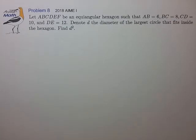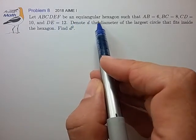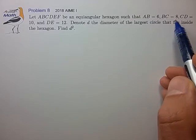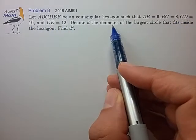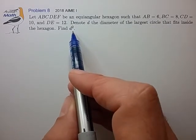Hi, this is problem 8 from the 2018 AIME I. Let ABCDEF be an equiangular hexagon such that AB has length 6, BC 8, CD 10, DE 12. Denote d the diameter of the largest circle that fits inside the hexagon. Find d squared.